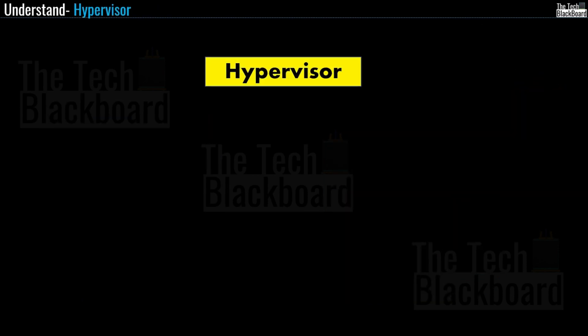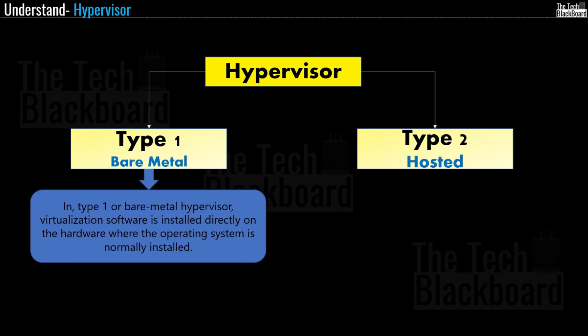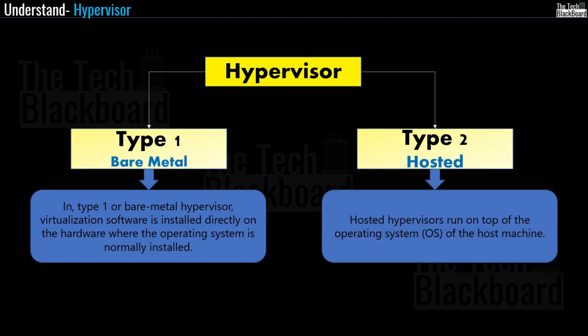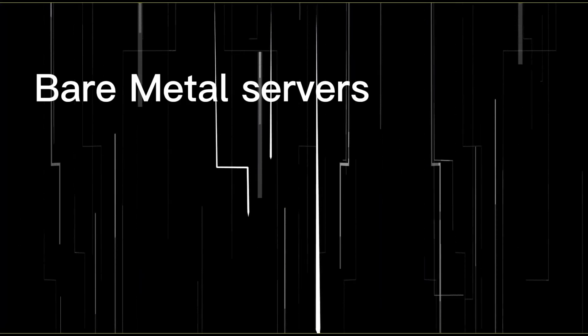There are two major types of hypervisors. Type 1, also known as the bare metal hypervisor, installs virtualization software directly on the hardware where the operating system would normally be installed. Type 2, also known as the hosted hypervisor, runs on the operating system of the host machine. So type 1 is hardware virtualization and type 2 is operating system virtualization. A deep dive on hypervisors is outside the scope of AZ-900, but this quick look gives you the context you need.